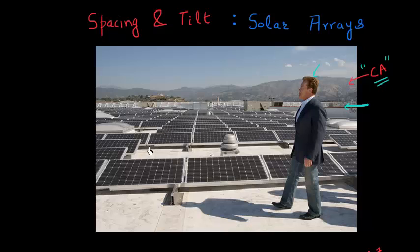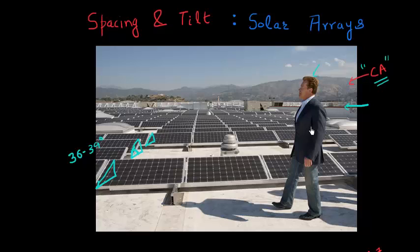What I'm surprised by is that I see these panels placed on a tilt, but this is for Southern California. I noticed that the tilt of these panels, which I would expect to be close to the latitude — between 36 or 39 degrees — but these panels are tilted much less than that. So I'm wondering what's going on here.